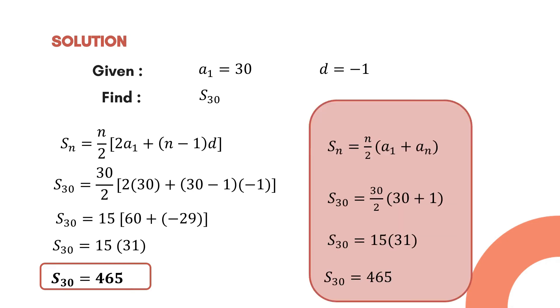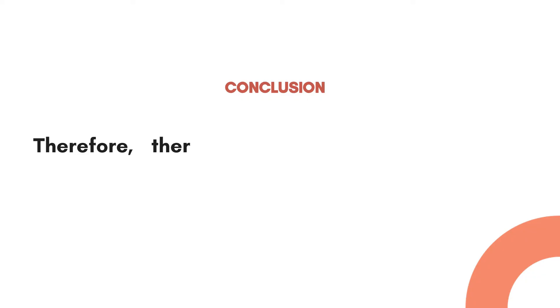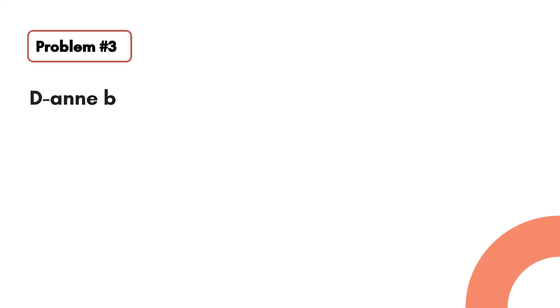There is another way of solving this problem using the previous arithmetic series formula, assuming the value of the last term is 1. Simplifying that gives the same answer of 465. Therefore there are 465 cans in the pyramid.